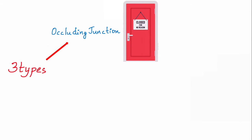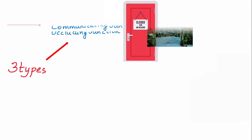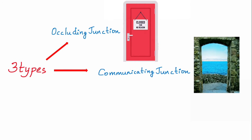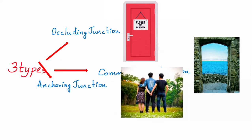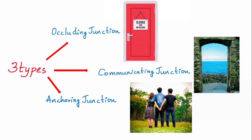Now let us see the types of cell junction. The first type is the occluding junction. Occluding junction is like a closed door - nothing is going to pass through this junction. Next is the communicating junction. This is like a doorway without a door - anything can pass through these junctions. Next is the anchoring junction. This anchoring junction actually connects two adjacent cells. It is a mechanical attachment between two neighboring cells or the cell and its extracellular matrix.